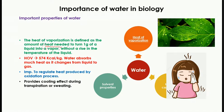The third important property of water is heat of vaporization, defined as the amount of heat needed to turn one gram of liquid into vapor without a rise in the liquid's temperature. The heat of vaporization of water is 574 kilocalories per kilogram, meaning that water absorbs a large amount of heat as it changes from liquid to gas.